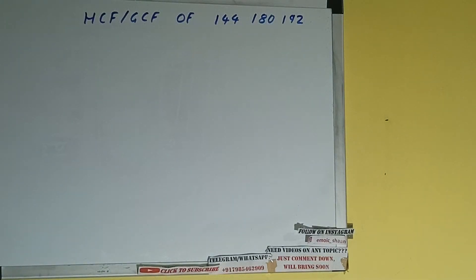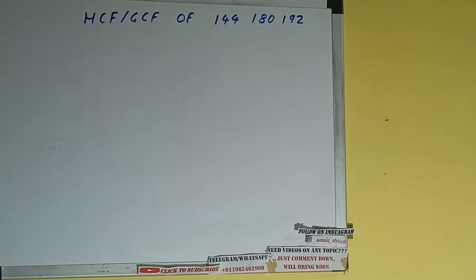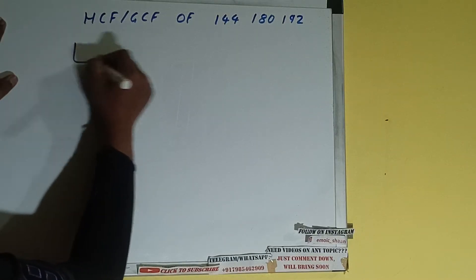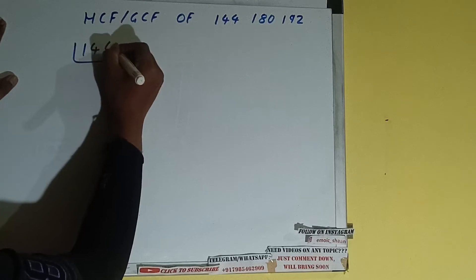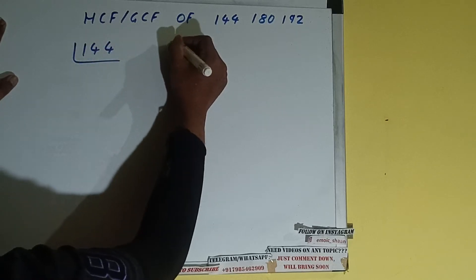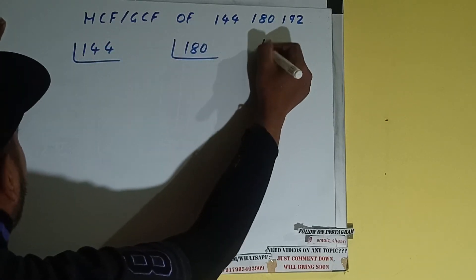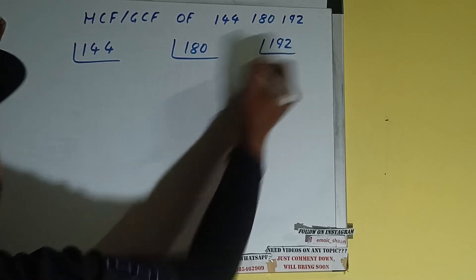Hello friends, in this video I'll be helping you with the HCF or GCF of the numbers 144, 180, and 192. So let's start. The first step is to do the prime factorization of each of the numbers separately — first for 144, then for 180, and then for 192.